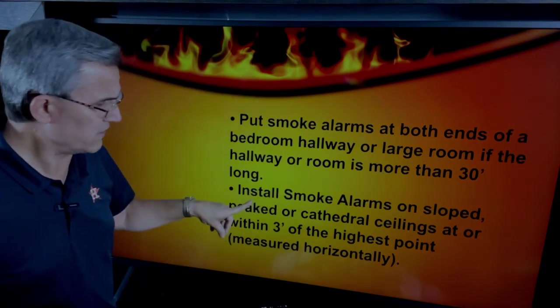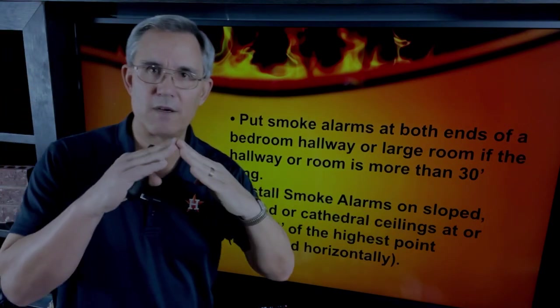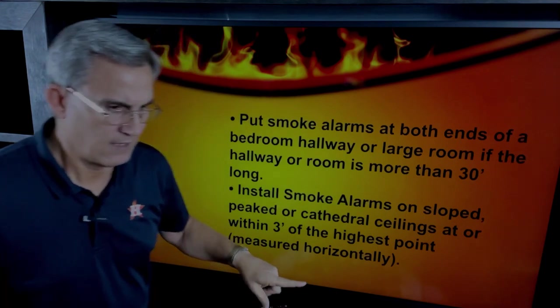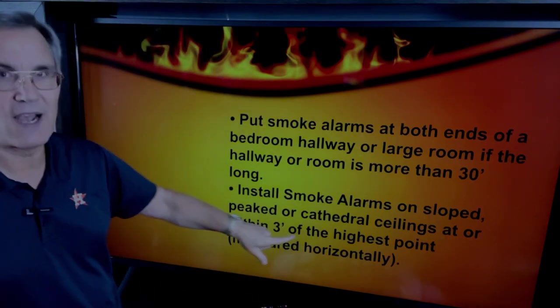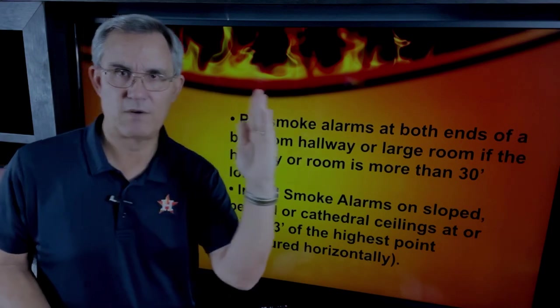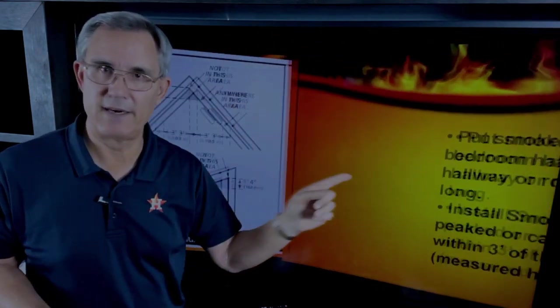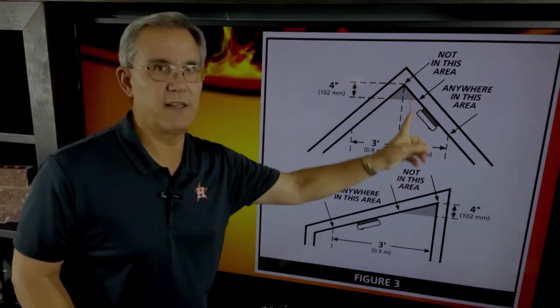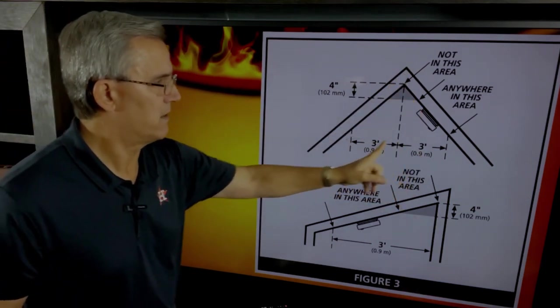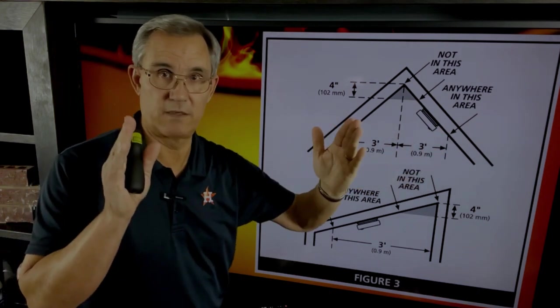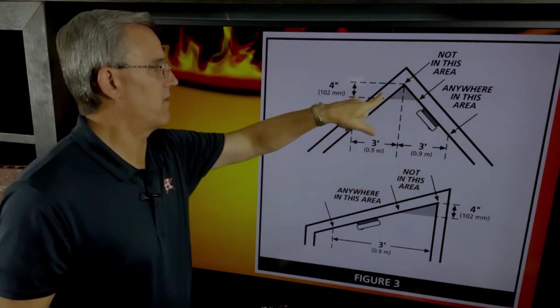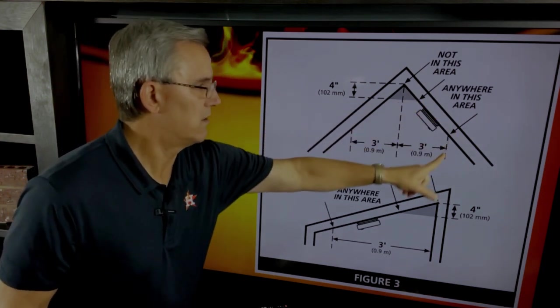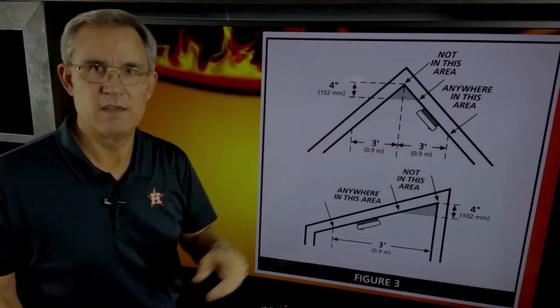And again, here's another good one: smoke alarms on sloped, what I call cathedral ceilings. If you got a big cathedral ceiling, they say, hey, within three feet of the highest point measured horizontally, and I'll show you that. It's right here. What do I mean here? So there's our cathedral ceiling and they're just saying, hey, within three feet of that peak, I will have a smoke detector smoke alarm. It won't be within that four inches up there toward the peak.